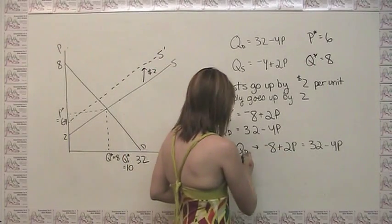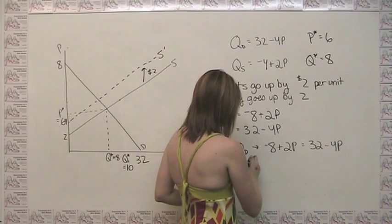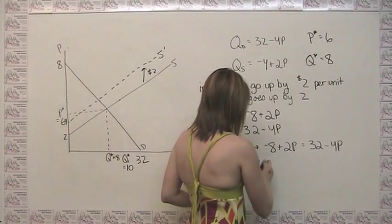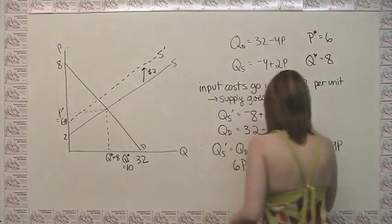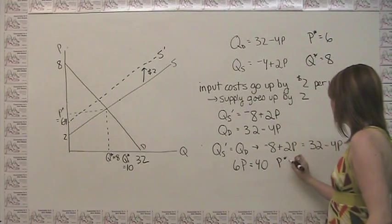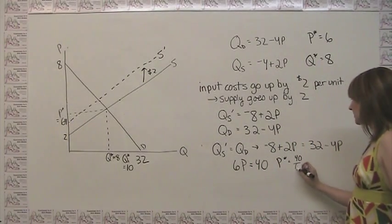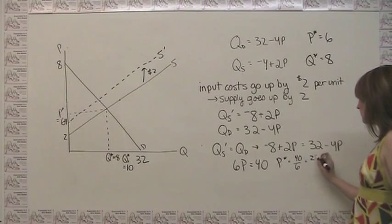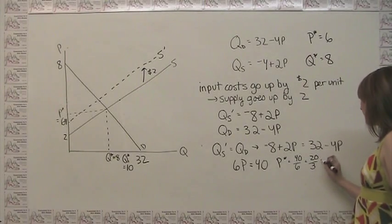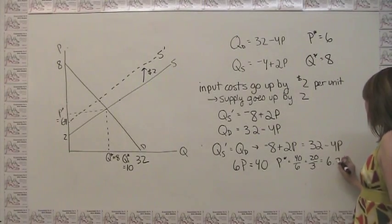So here we can just say, well this is going to happen where 6p is equal to 40, so then our p star is equal to 40 over 6, which is 20 over 3, which is about 6.7.